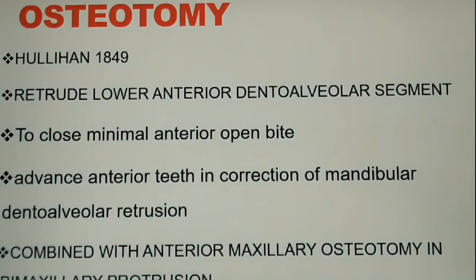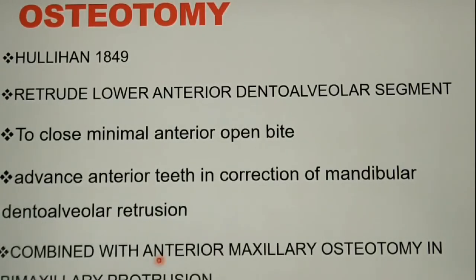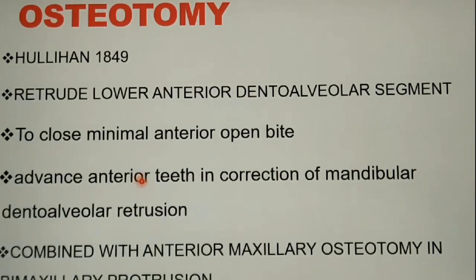Coming to anterior subapical osteotomy, first described in 1849, it was mainly indicated to correct the proclined lower anterior dentoalveolar segment. Other indications include closure of minimal anterior open bite, advancement of anterior teeth, and bimaxillary protrusion in combination with anterior maxillary osteotomy.